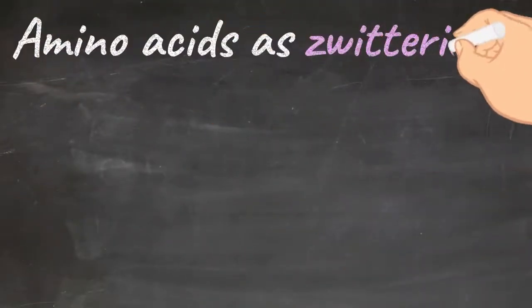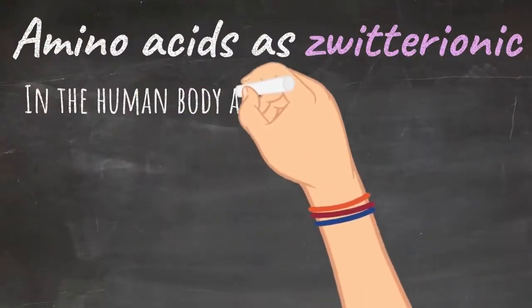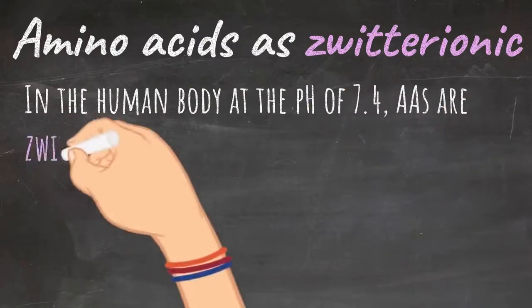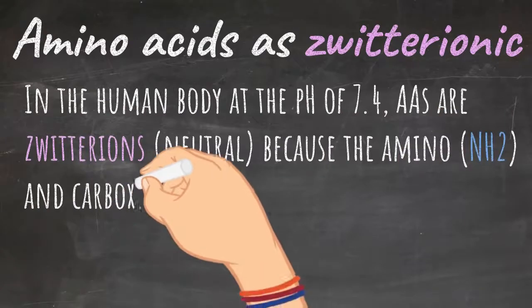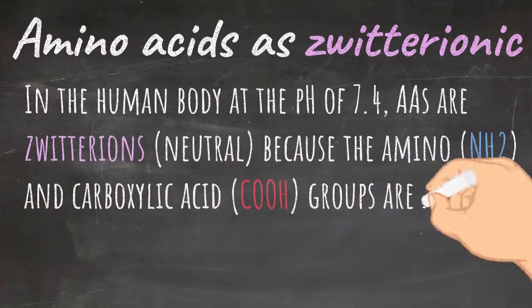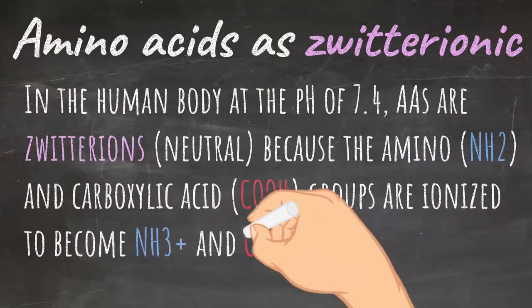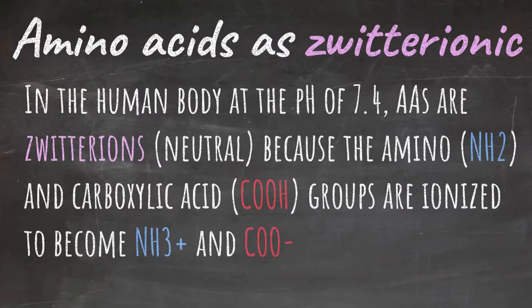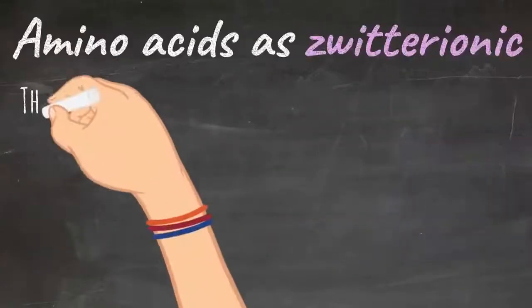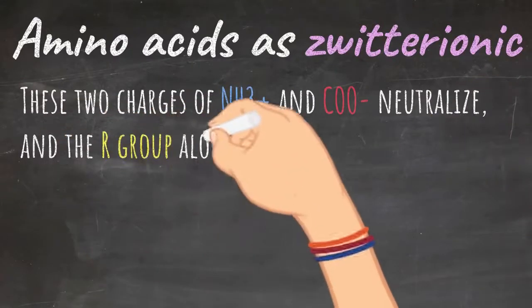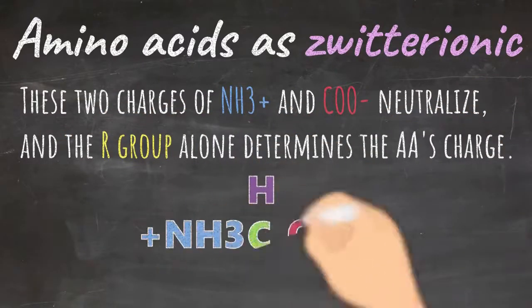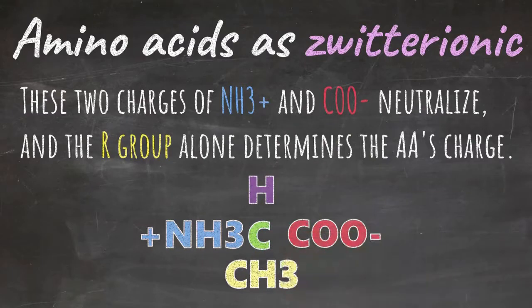In the human body at the pH of 7.4, amino acids are zwitterions, or neutral, because the amino group and carboxylic acid groups are ionized to become NH3 plus and COO minus. These two charges of NH3 plus and COO minus neutralize, and the R group alone determines the amino acid's charge.